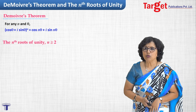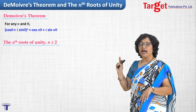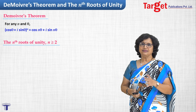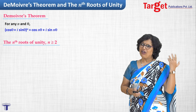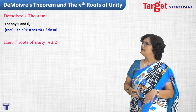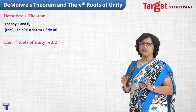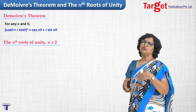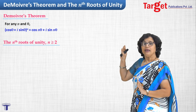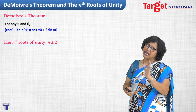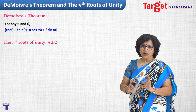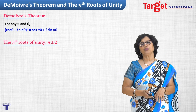Now let us move towards nth roots of unity, where n is greater than or equal to 2. Generally n equal to 2 (square root) and n equal to 3 (cube roots of unity) we have already done. So in most cases we go for n equal to 4 onwards. But the results here in nth roots of unity are applicable for square root and cube root both, so I write n greater or equal to 2.